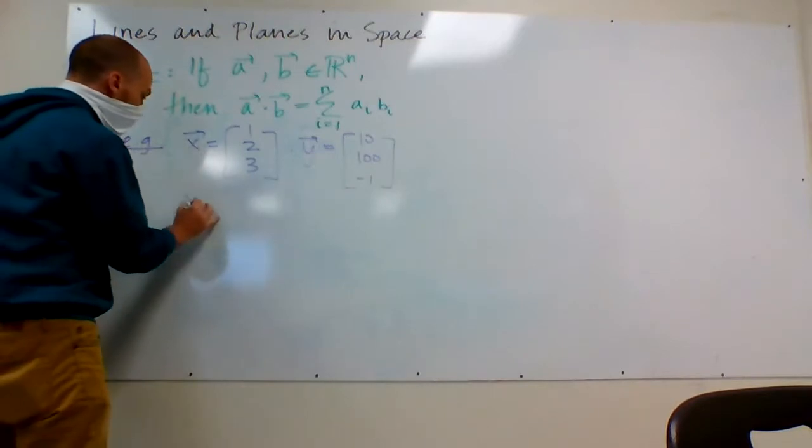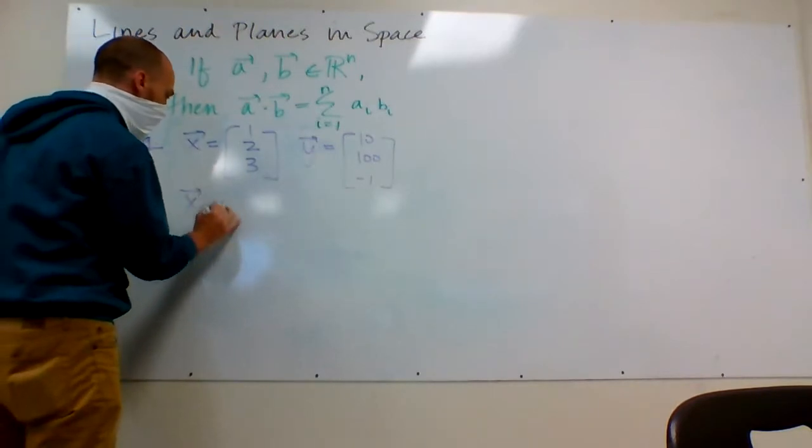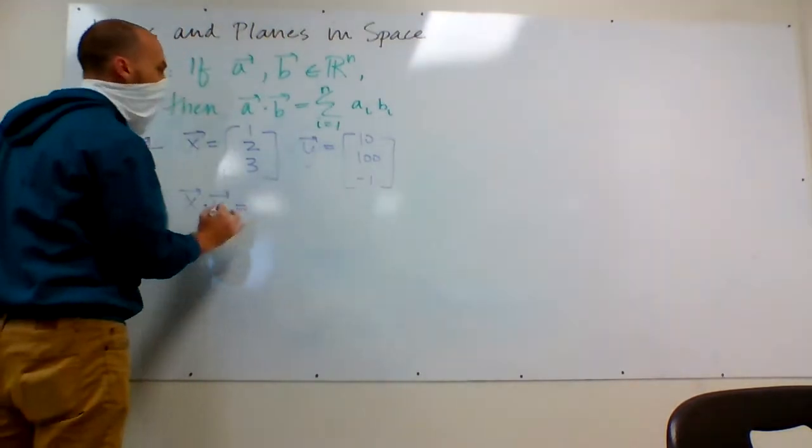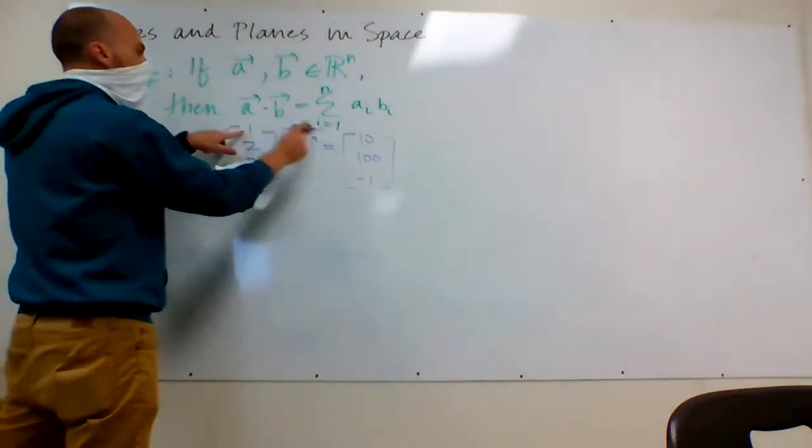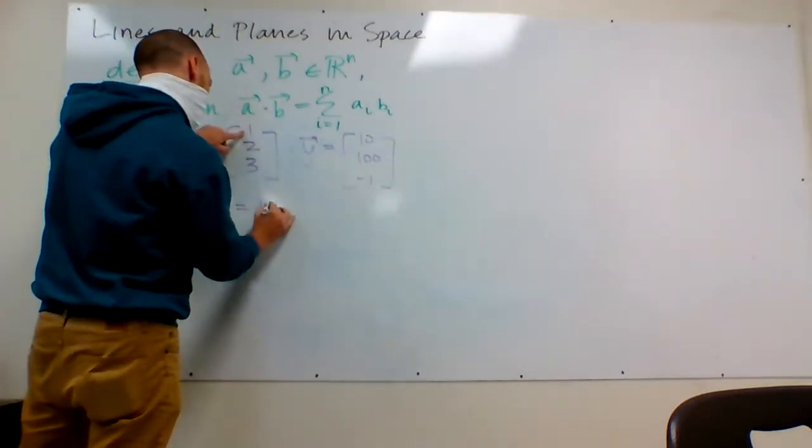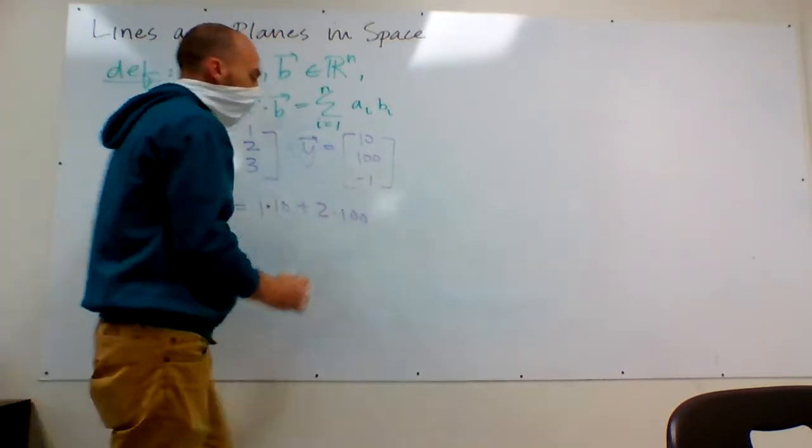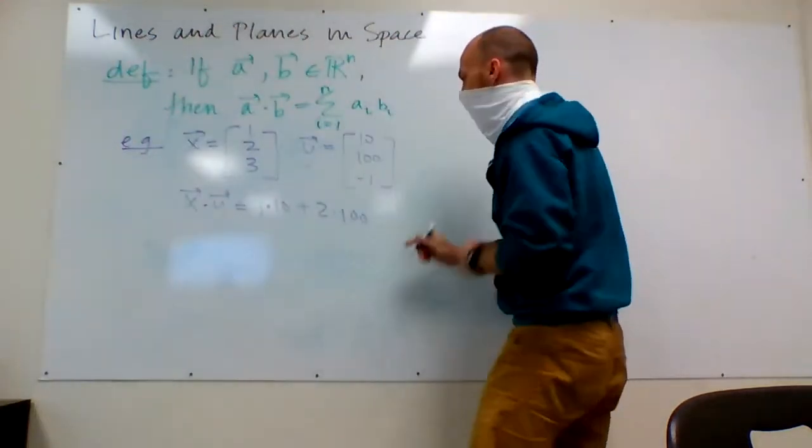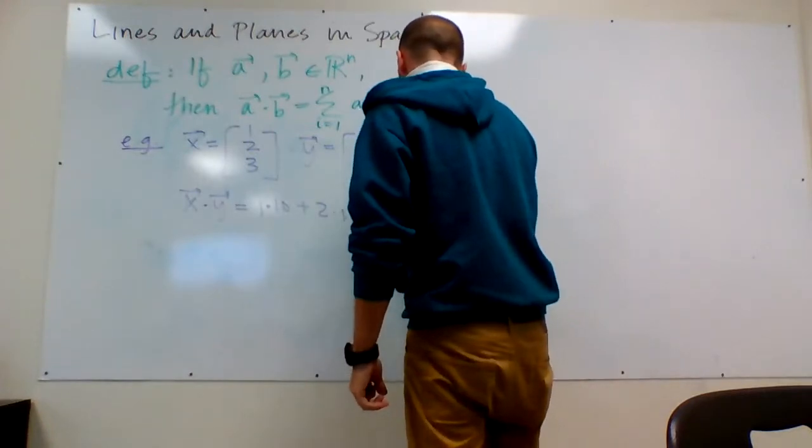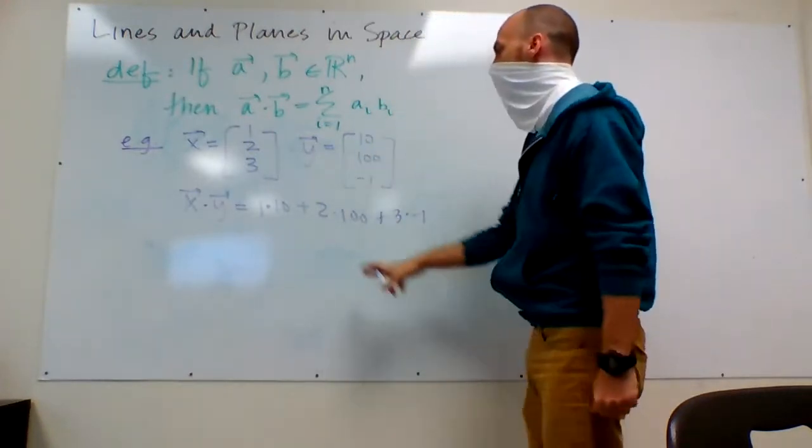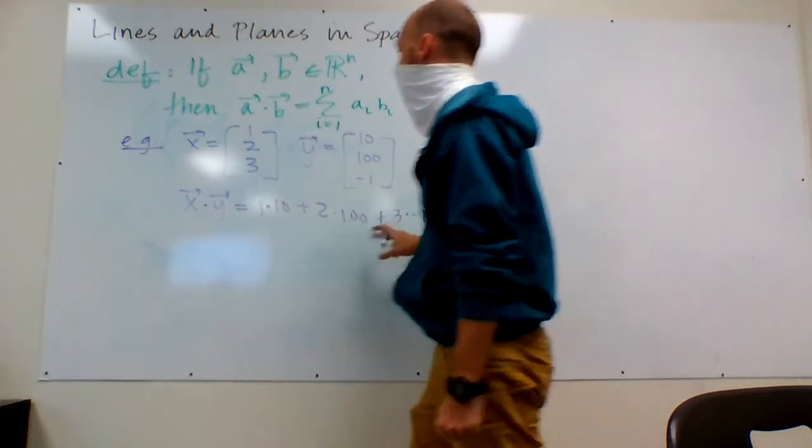Then X dotted with Y is equal to 1 times 10 plus 2 times 100 plus 3 times negative 1. So that's going to be 10, 210, 207.